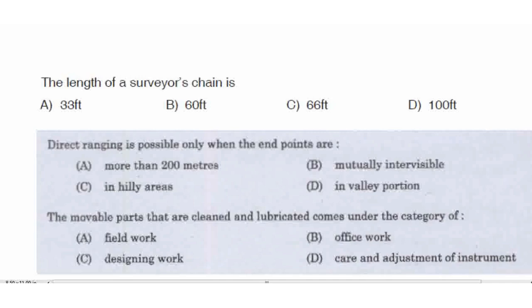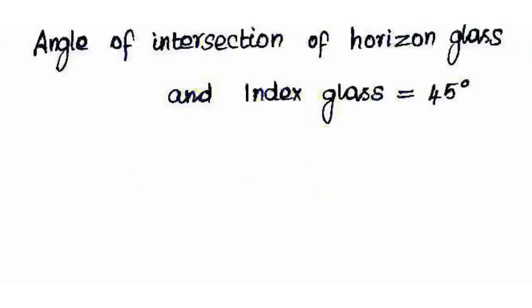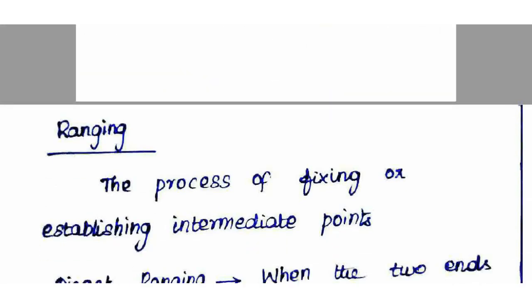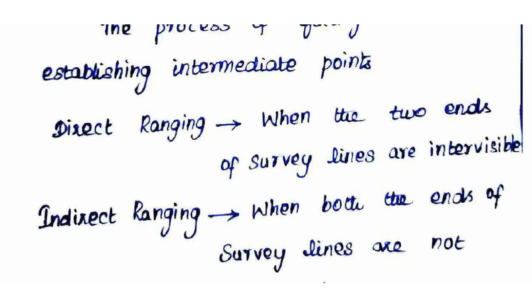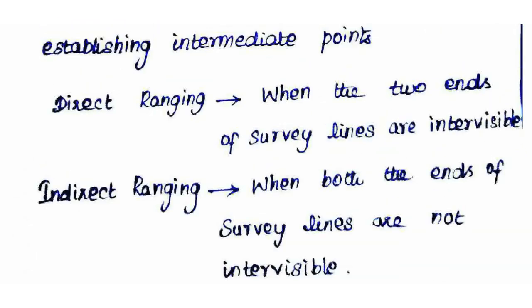Direct ranging is possible only when the end points are mutually intervisible. In the case of indirect ranging or reciprocal ranging, both ends of the survey line are not intervisible. Ranging is the process of fixing intermediate points on a survey line.